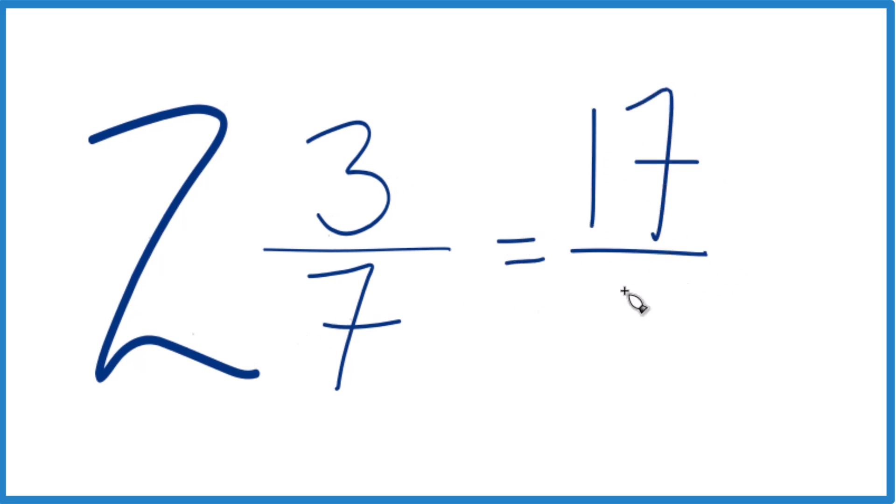Then we just bring the denominator across. We end up with our improper fraction, 17 sevenths.